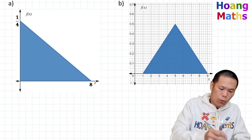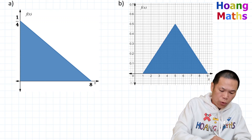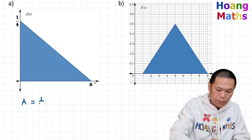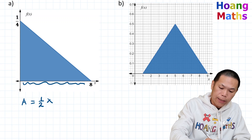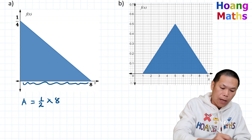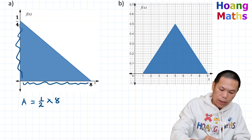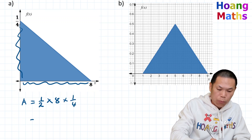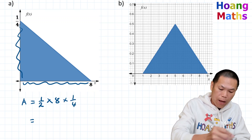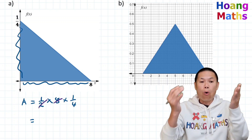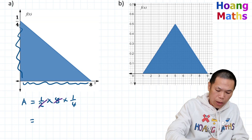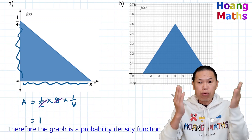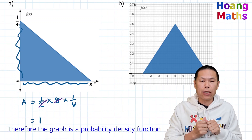The area of this triangle is a half times the base times height. The base is eight units and the height is a quarter. Half of eight is four, and four times a quarter is one. So therefore it is a probability density function.